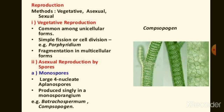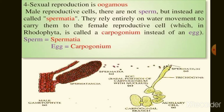Sexual reproduction is complex and has a high degree of oogamy. The male sex organ is spermatangia, which produces male reproductive cells called spermatia. The female reproductive structure is carpogonium, which produces the female reproductive cell also called carpogonium. They undergo fertilization for reproduction.